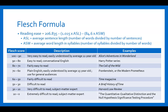A score of 100 to 90 is very easy to read — easily understood by an 11-year-old — such as Alice's Adventures in Wonderland. A score between 90 and 80 is easy to read, representative of conversational English, with most books in the Harry Potter series as an example. A score of 80 to 70 is fairly easy to read, and an example would be The Call of the Wild.